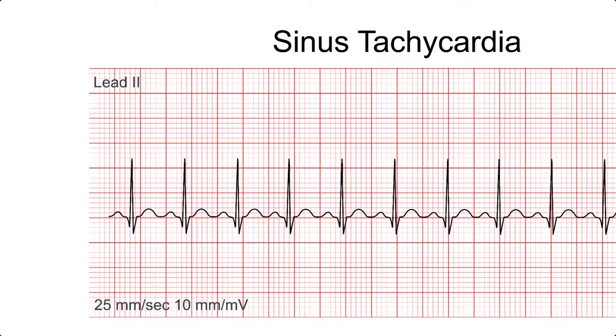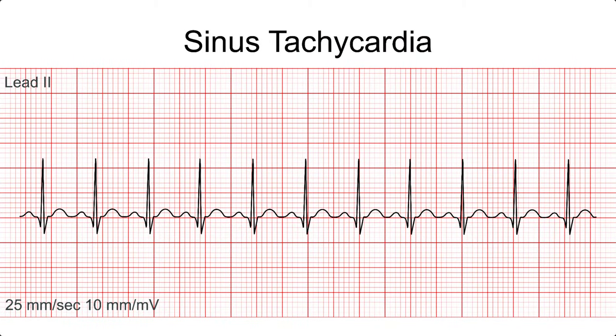On the contrary, sinus tachycardia will also look exactly like a normal sinus rhythm, except the rate will be greater than 100 beats per minute. Some patients may be completely asymptomatic and need no nursing interventions. However, if symptomatic, you can expect symptoms like chest pain, dizziness, shortness of breath, lightheadedness, palpitations, or syncope.